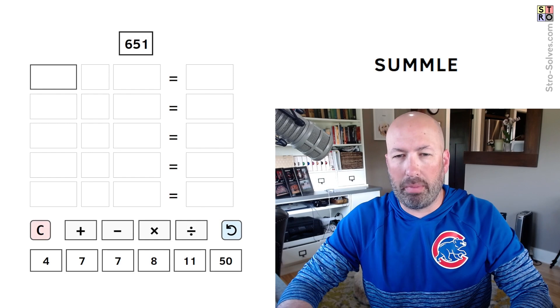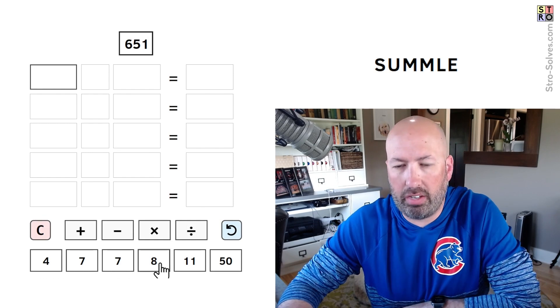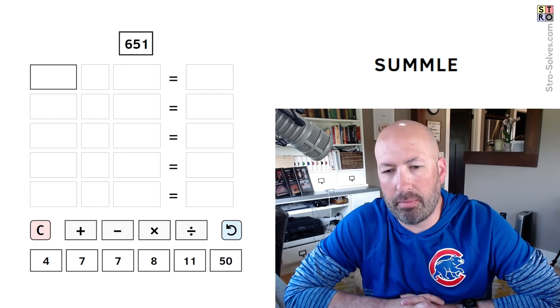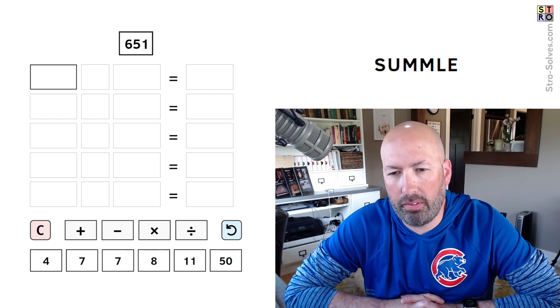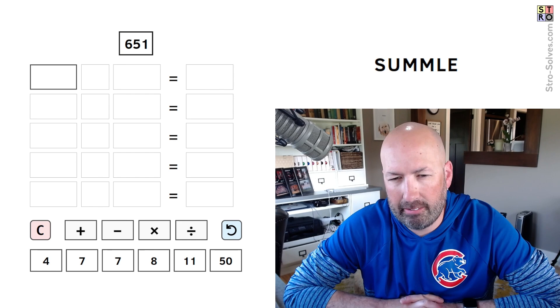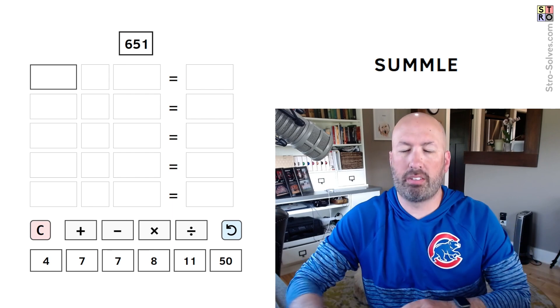So here we go, we're making 651. We've got 4, 7, 7, 8, 11, and 50 down here. I mean, it seems like 50 times something is the obvious way to start. 50 times 11 is 550, then we'd need 101, doesn't seem great.